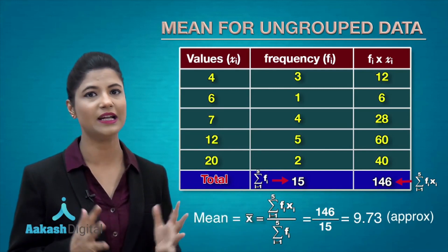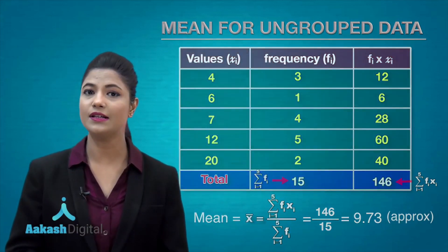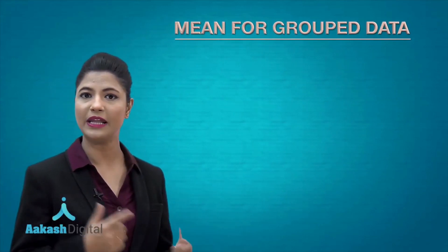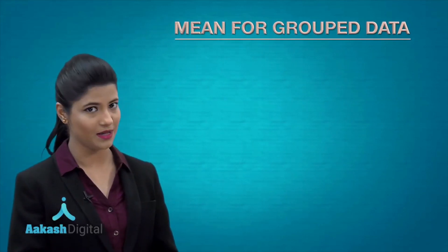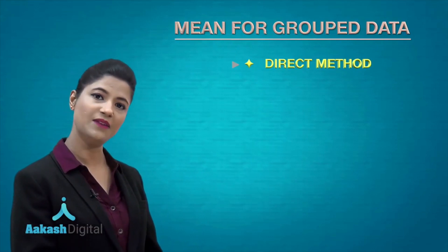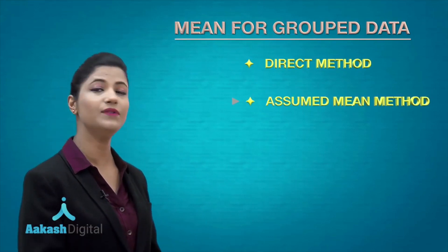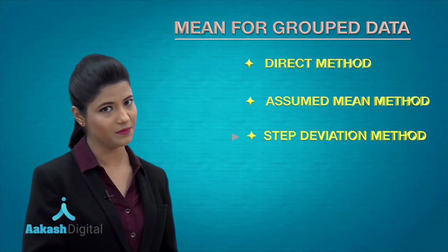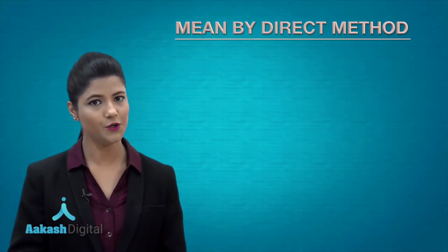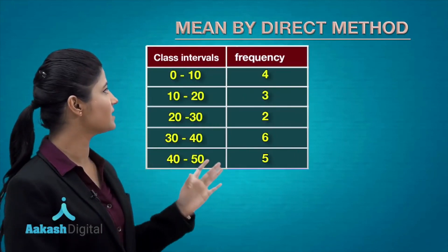Moreover, we have discussed the mean for grouped data, which can be obtained by three methods: the first is the direct method, then we have the assumed mean method, and after that we have the step deviation method. Now let's see how you obtain the mean using the direct method.